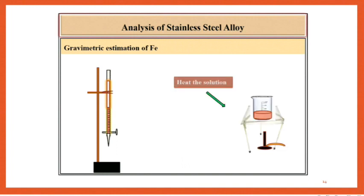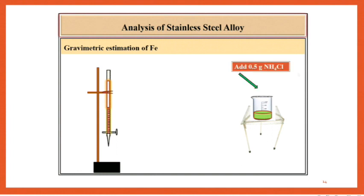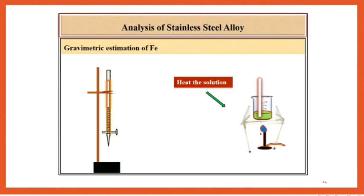Continue heating until the solution becomes yellow-green, then cool the solution. Add 0.5 gram NH4Cl and stir well. Then add 1 to 1 ammonia drop by drop and stir well. Heat the solution for 2 minutes.